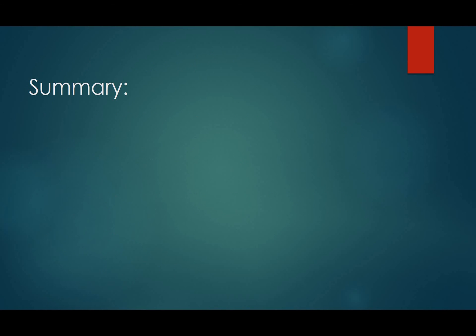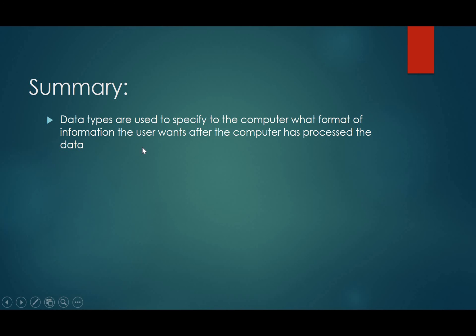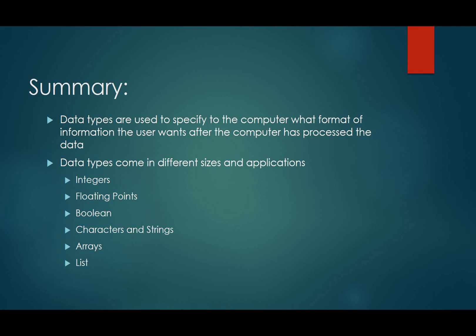So let's go ahead and summarize really quickly here. Data types are used to specify to the computer what format of information the user wants. That's really important. We want our data to come back to us in the way we want it. We don't want to have meaningless gibberish. We don't want to have binary. And then data types come in different sizes and applications. So remember, we have different applications for certain data types. And just to review those data types, we have integers, floating points, booleans, characters and strings, arrays, and lists. So that's the video. We'll be extrapolating and using these data types in future videos. So make sure that you know the application of each of these data types. Thanks for watching. I'll talk to you later.